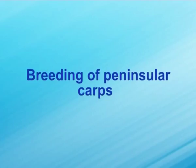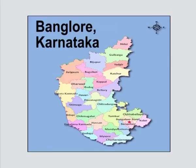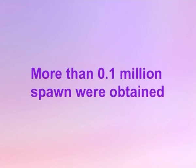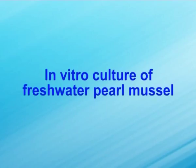Coming to the breeding of peninsular carps: seven sets of Labeo fimbriatus have been bred successfully using a portable hatchery at Bangalore, Karnataka. More than 0.1 million spawn were obtained. Subadults and fingerlings of Puntius pulchellus have been collected from the Western Ghats region and are being cultured under captivity with artificial feed. In vitro culture of freshwater pearl mussel: primary in vitro cell culture of nacre-secreting paleomantle epithelial tissue explants of freshwater pearl mussel (Lamellidens marginalis) has been carried out successfully.